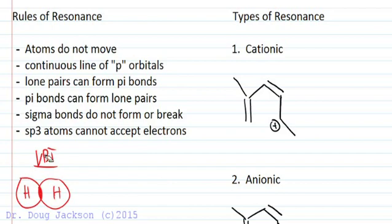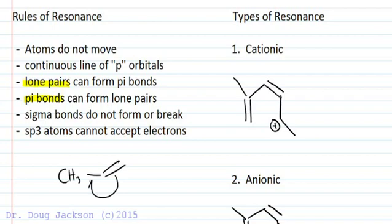There's a few rules for resonance. Atoms don't move and we must have a continuous line of p orbitals between atoms. Even if they're lone pairs, those lone pairs can be taken into pi bonds and then pi bonds can be kicked out into lone pairs. Sigma bonds don't form or break and an sp3 atom cannot accept a pair of electrons. For example, if we had this compound, we could not send electrons toward an sp3 atom.